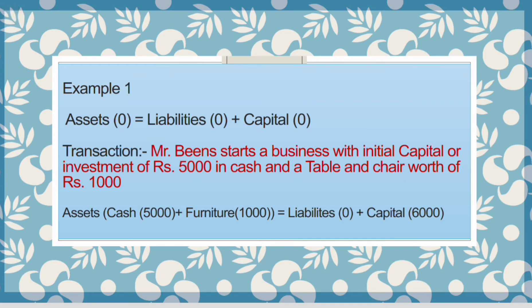The first transaction occurs in the business: Mr. Bean starts a business with initial capital or investment of rupees 5000 in cash and a table and chair worth rupees 1000. Mr. Bean introduced capital of cash rupees 5000 and furniture worth rupees 1000. Assets will add cash 5000 and furniture 1000. Liabilities have no effect with this transaction and capital is increased by rupees 6000, so both sides of the equation are equal to 6000.